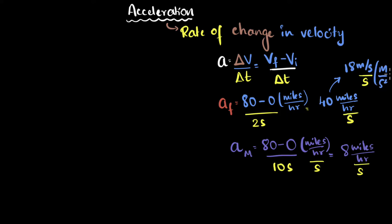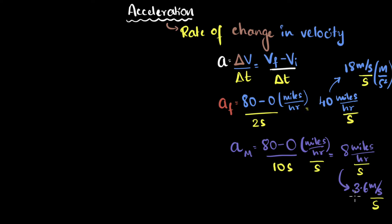And that's not very intuitive, right? What is meters per second squared? You should always remember, it is meters per second per second. And the same is the case for my car: eight miles an hour, if I convert it to meters per second, gives me about 3.6 meters per second. So its velocity increases by 3.6 meters per second per second — or again, I can say it is 3.6 meters per second squared. So we need to be mindful about the unit: it's meters per second squared.